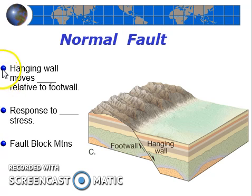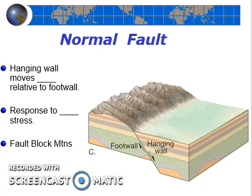What has happened to the hanging wall relative to the foot wall? Hopefully you noted that the hanging wall has slipped down relative to the foot wall. Some have suggested that's why it was named a normal fault — this downward movement along a slope is the normal result you would expect simply due to gravity. What type of stress would cause this? If you compressed the two sides together, the hanging wall would actually go up. So a normal fault is a response to tensional stress — the rock units are being pulled apart, and as a result the hanging wall slips down relative to the foot wall, creating a normal fault.